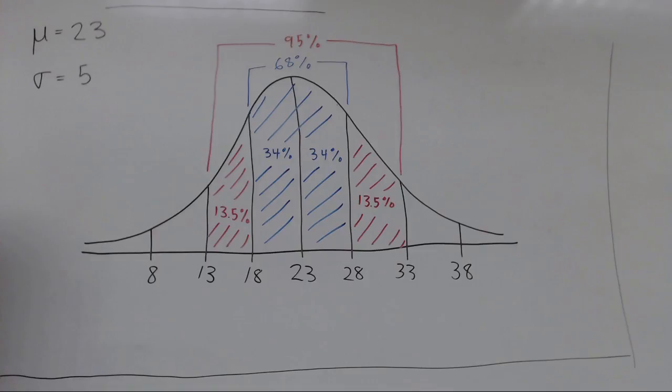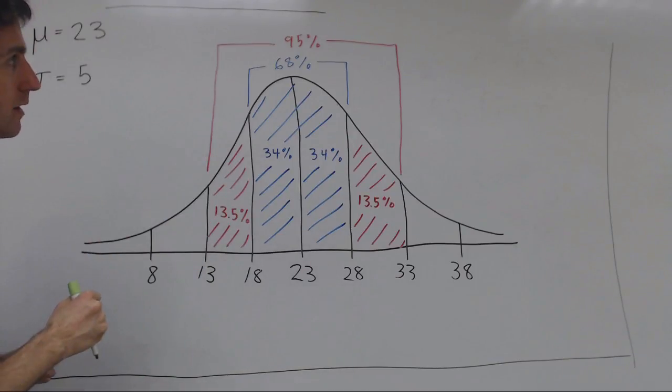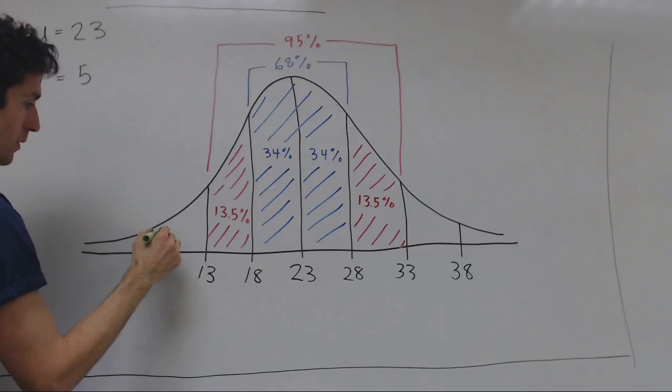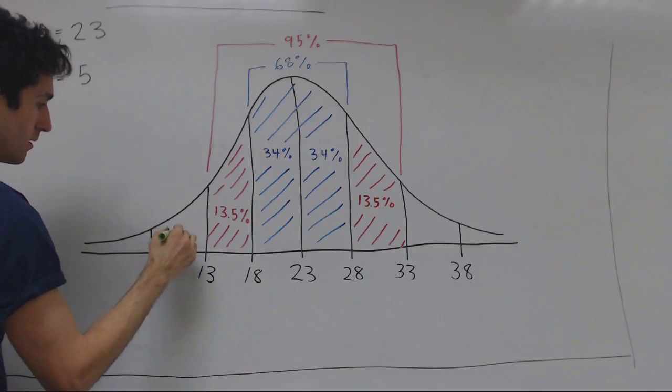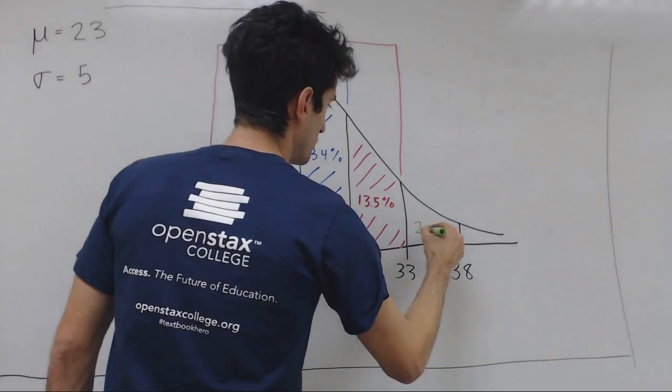Now according to the empirical rule, going out three standard deviations would give us 99.7%. Since 95% is already accounted for, it just leaves 4.7%. Splitting that in two, we get 2.35% and 2.35%.